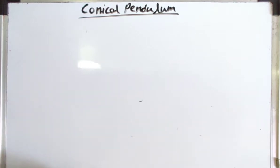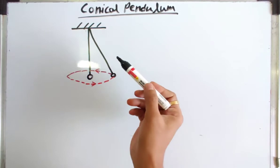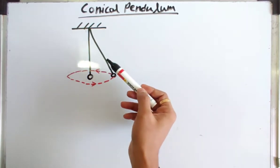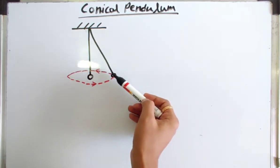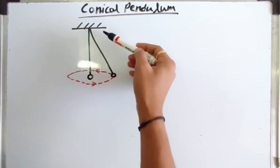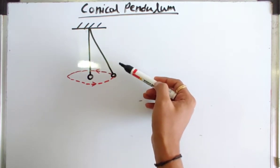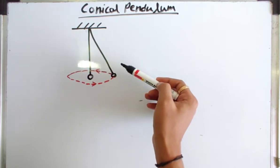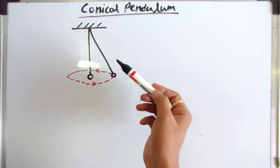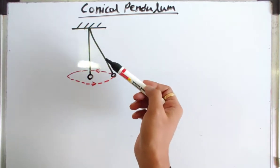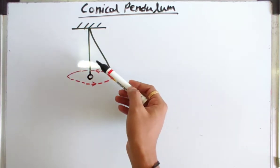In this video we are going to study conical pendulum. A tiny mass called a bob connected to a long, flexible, massless, inextensible string and suspended to a rigid support is called a simple pendulum.